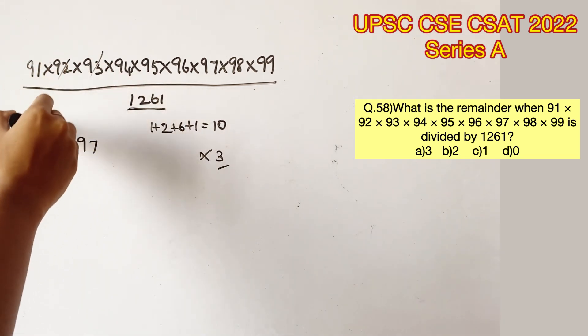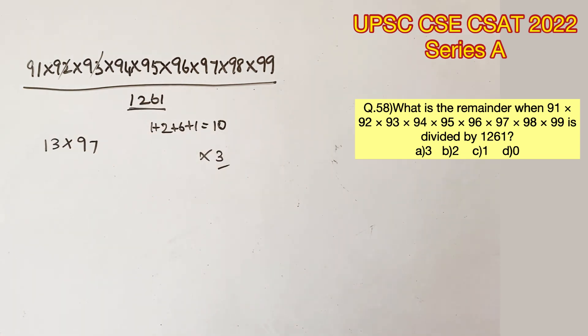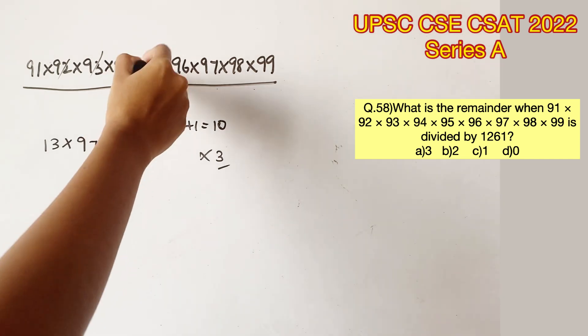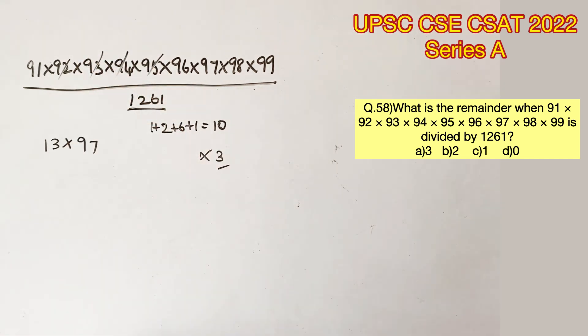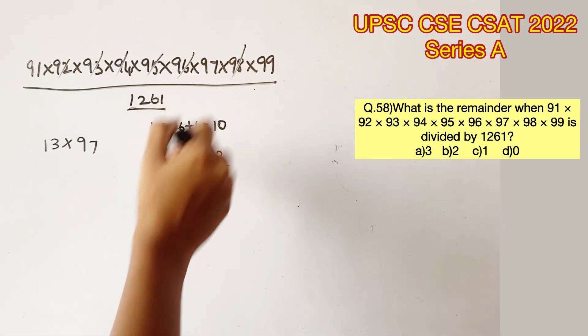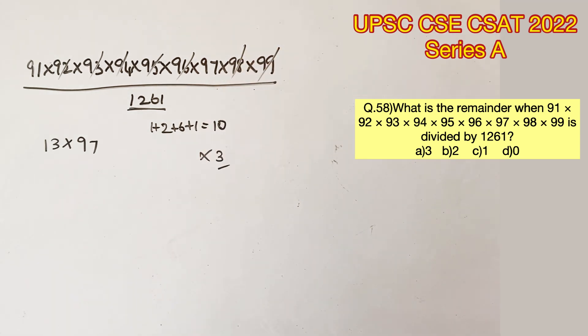92 is an even number so we can eliminate that as well, because any number multiplied by an even number is going to give you an even number. With that we can also eliminate 95 because 5 will produce numbers ending with 0 or 5. So after eliminating all the numbers which we are sure is not the factor of 1261,